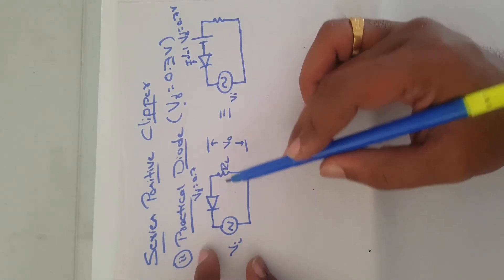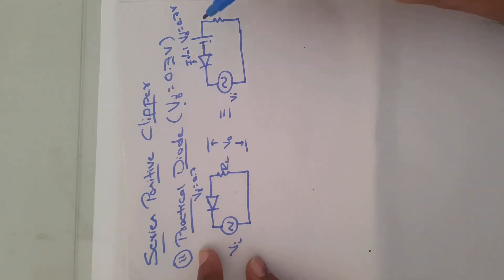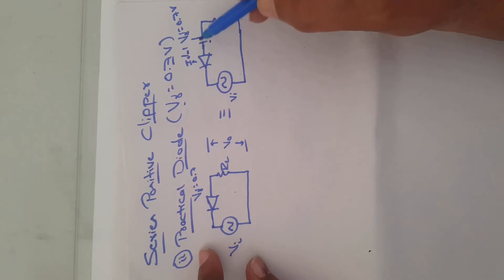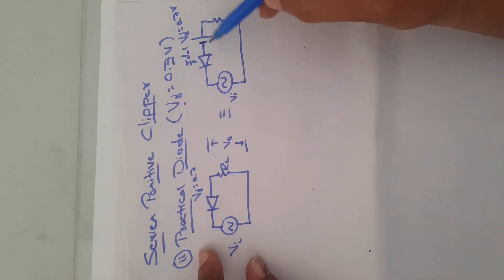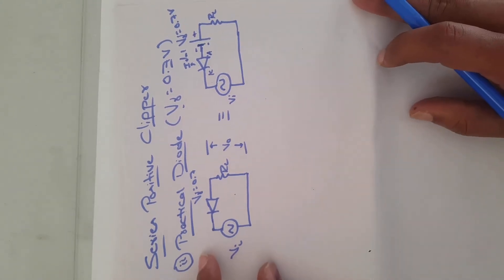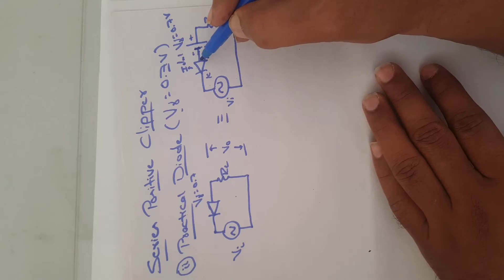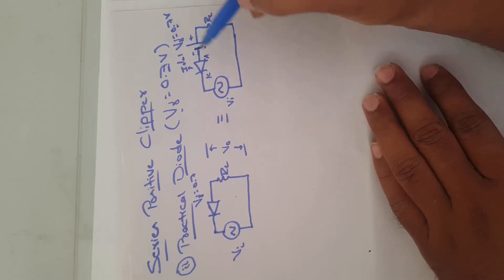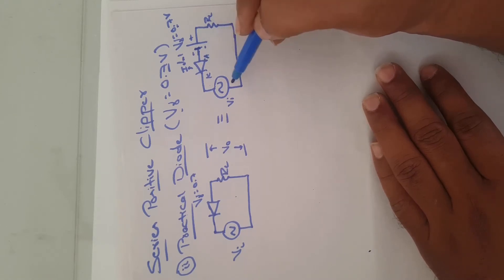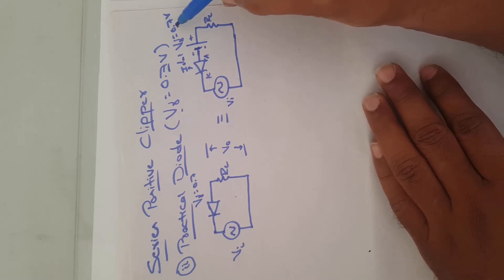The practical clipper circuit can be redrawn with the DC source representing the cut-in voltage. Since we encounter the cathode first when tracing the circuit, the negative terminal of the battery comes first, followed by the positive terminal. Observe that the negative terminal of the battery is connected to the anode side. To turn on this diode, you must apply a voltage more negative than -0.7 volts; otherwise the diode remains off.